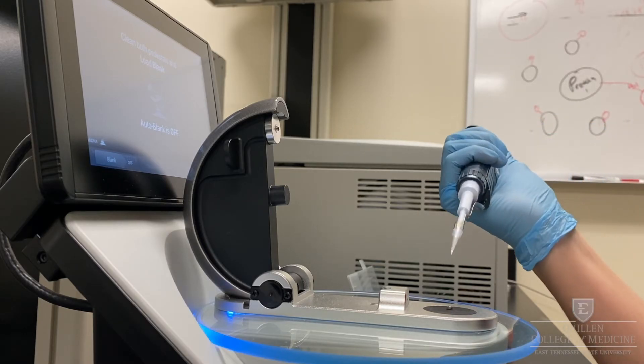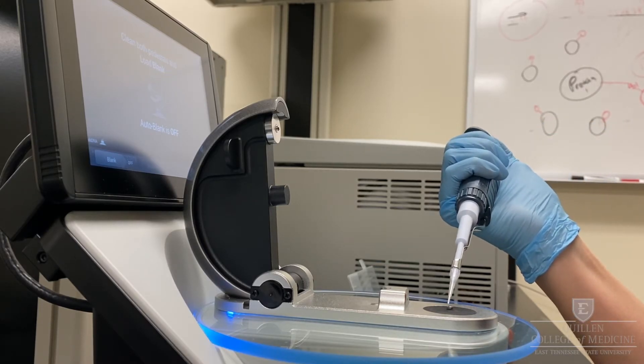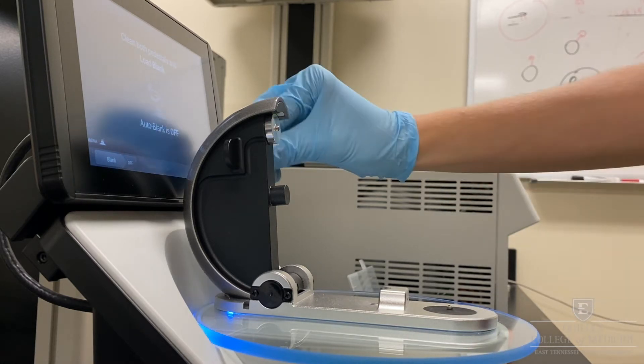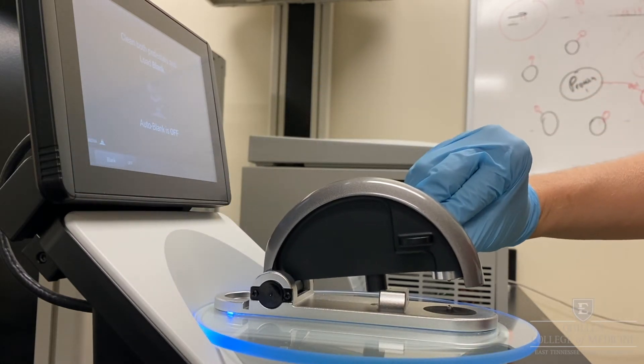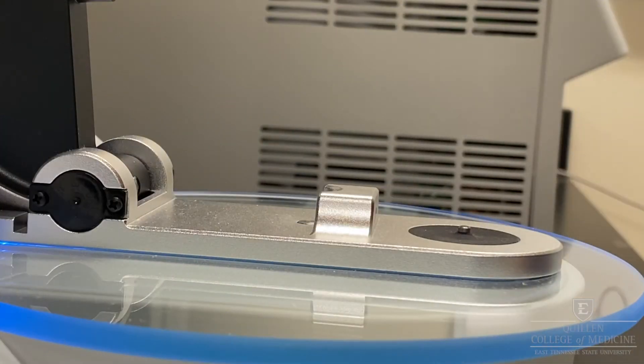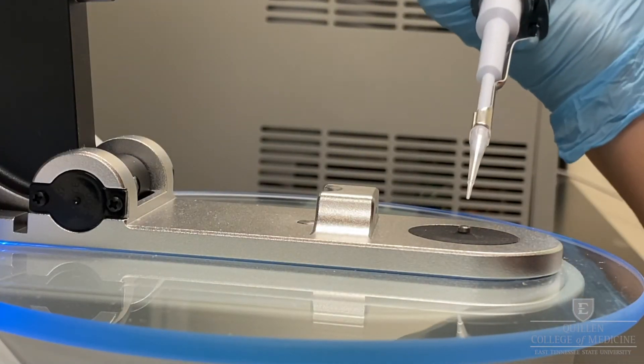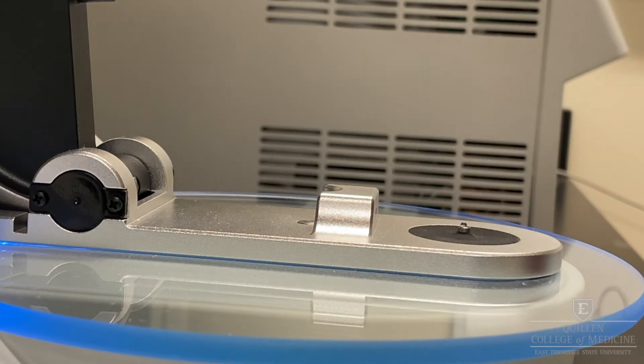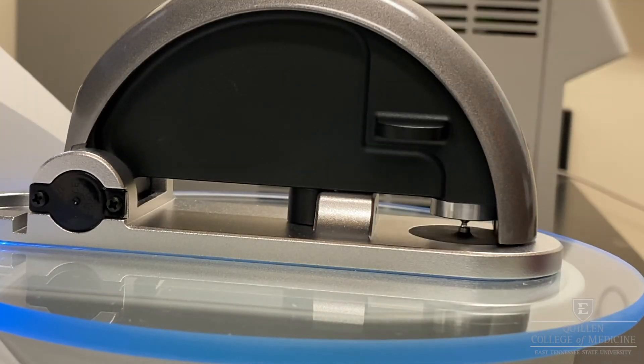You'll then apply one or two microliters of either your diluent or your sample to the lower pedestal and lower the upper arm. If we look at that more closely, we can see the drop of sample on the hydrophobic lower pedestal and the column created by lowering the arm.